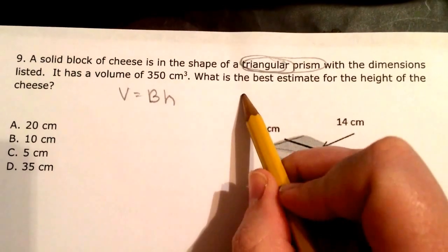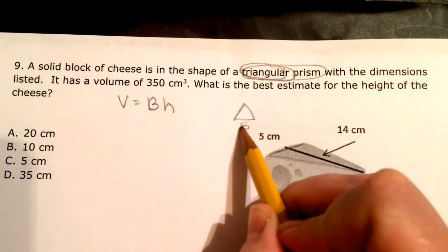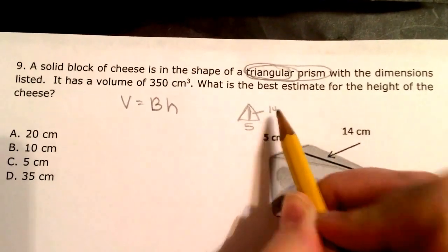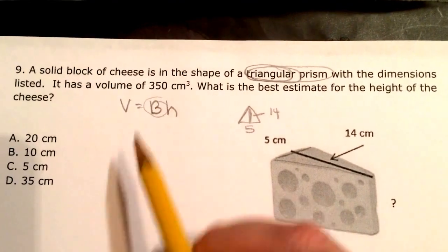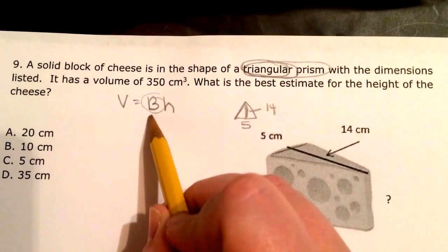Okay, so I have a triangle, the base is 5, and the height is 14. Alright, so remember, big B is area of the base. So I need to find that.